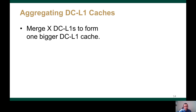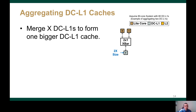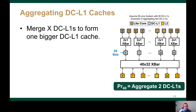Decoupling the L1 cache from the GPU cores enables aggregating or merging multiple DCL1s to form one bigger DCL1 cache. As an example, in this 80-core system with 32 L2 slices, given two light cores with their corresponding DCL1 caches, we can merge these two DCL1s into one twice-the-size DCL1 cache. The corresponding two cores can access the bigger DCL1 cache via a 2-by-1 crossbar. The 40 DCL1s are then connected to the 32 L2 slices using a 40-by-32 crossbar. We refer to this design as PR40.